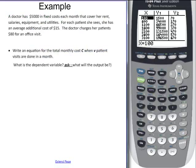So let's look at an example. The doctor has $5,000 in fixed costs, so that's a piece of information we know. And that will cover her rent, salaries, equipment, and utilities. For each patient she sees, she has an additional cost of $15. And then the doctor charges $80 for an office visit. So that's the information that will be important to us today.